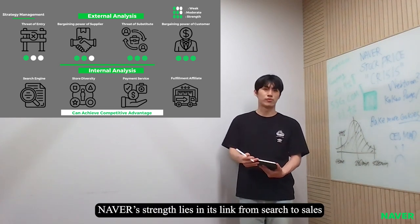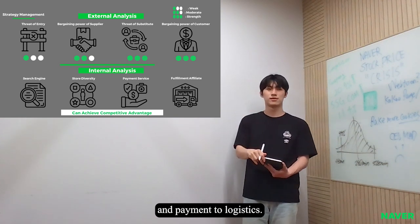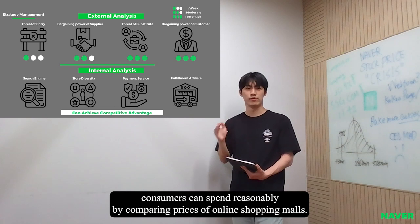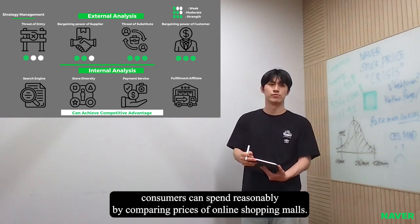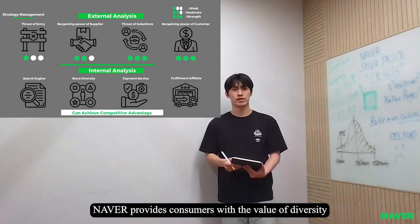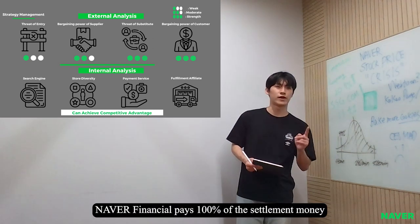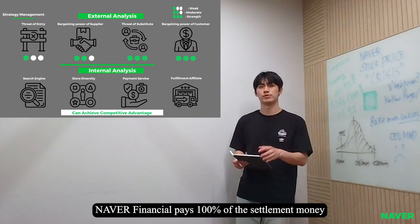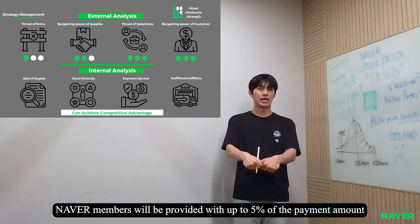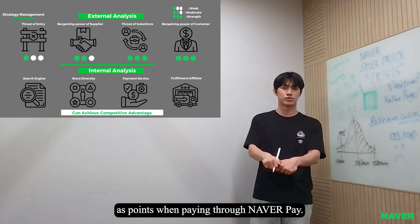Neighbor's strengths rise in each link from search to sales and payment to logistics. Since Neighbor has a search engine with the largest market share in Korea, consumers can spend reasonably by comparing prices across online shopping malls. Neighbor provides consumers with the value of diversity through B2C smart stores and vertical stores. In addition, Neighbor's financial service pays 100% of the settled amount to smart store operators. Neighbor members will be provided with up to 5% of the monthly payment amount as points when paying through Neighbor Pay.